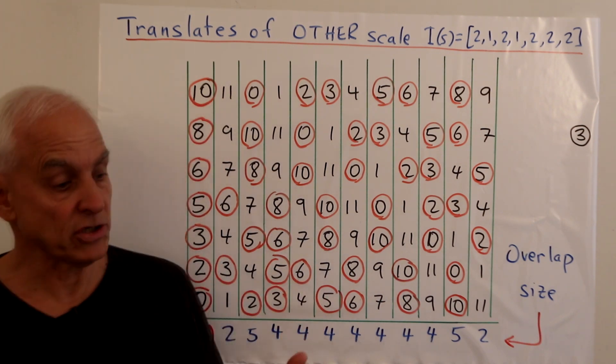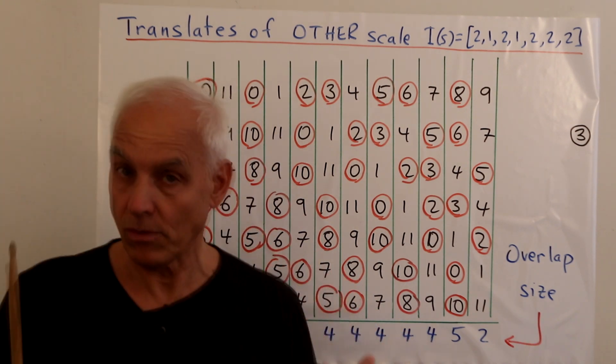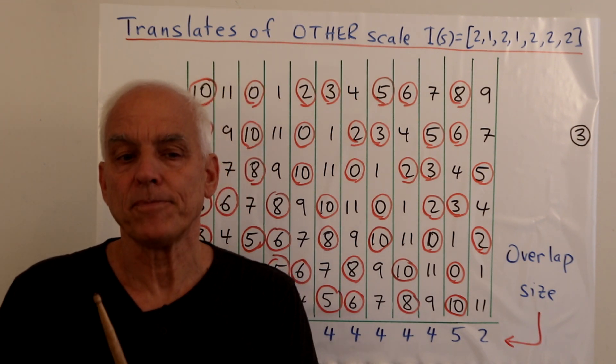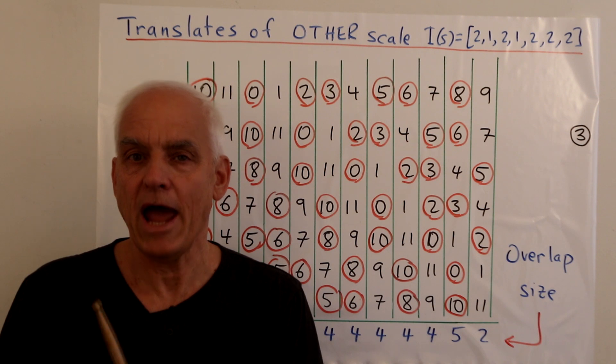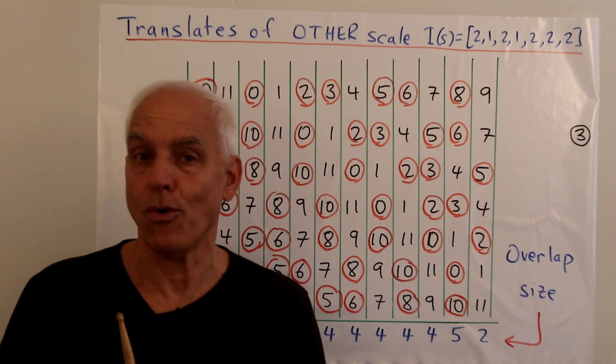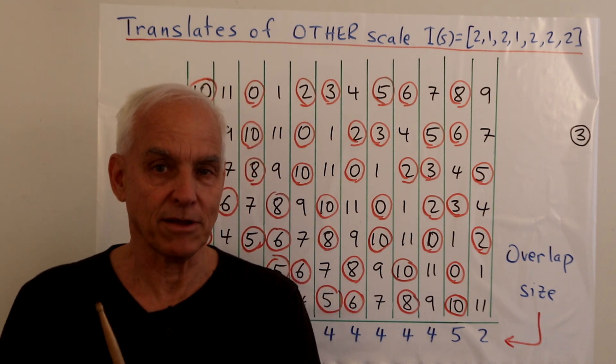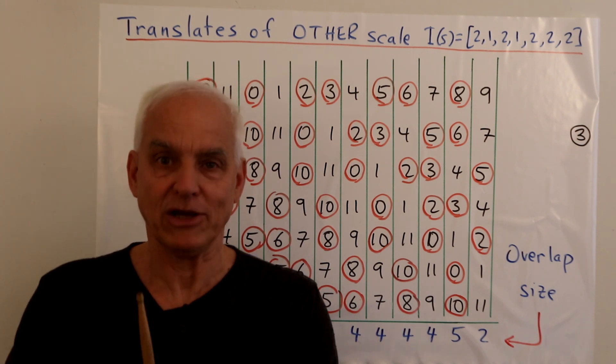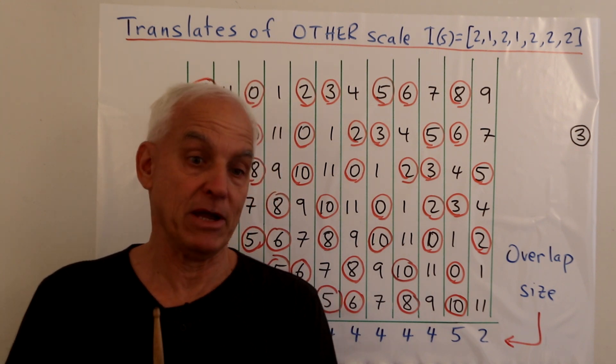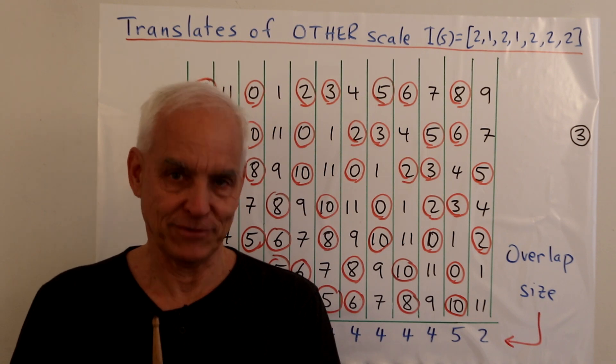So now a natural question is, okay, so of the various possible scales that we could consider, say with 7 notes, just how many scales or scale types are there that have this almost uniform property? And I don't know. I don't know. So that's perhaps something that some viewers would like to think about and report back to us. So perhaps you can figure it out and see if there are any other examples or if the major scale is unique in this fashion. I'm Noam Weilberger. Thanks for listening.